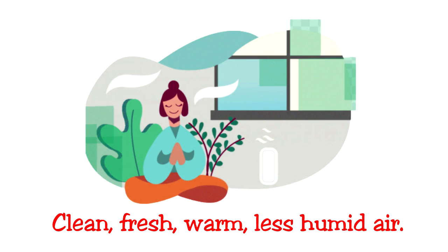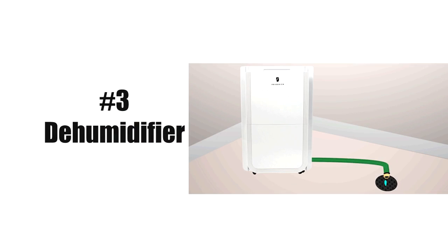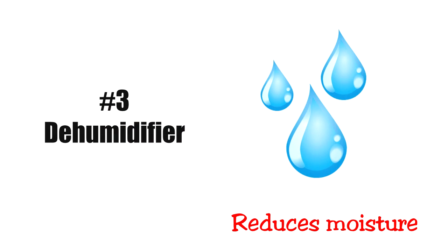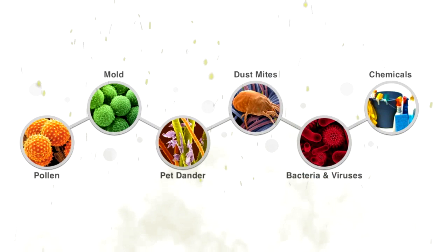The third thing is a dehumidifier. Running a dehumidifier will greatly decrease the amount of water and moisture within your home. Reducing the moisture in your home will greatly decrease the environment that dust mites and mold like to grow and thrive in.